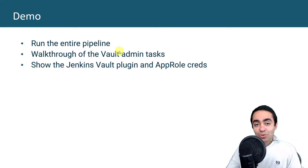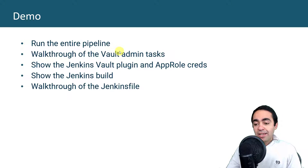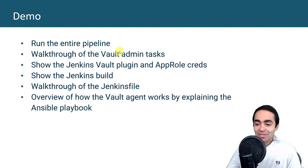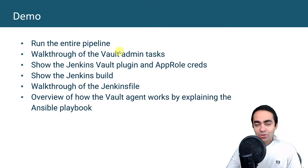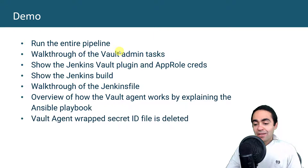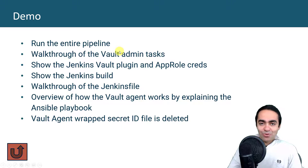Then we'll go over the Vault agent — how it works — explaining that using the Ansible playbook being used. We'll also see how the Vault agent removes the wrapped secret ID file once it uses it for the first time — it gets deleted. That's quite a few things to go through today, but I'll walk through it step by step to make it easier.